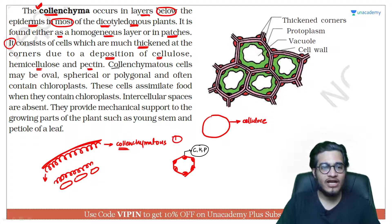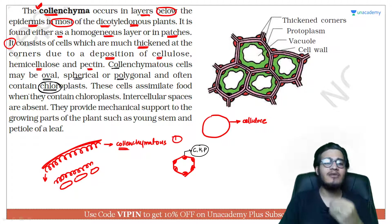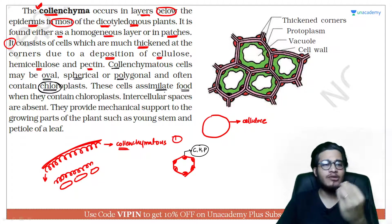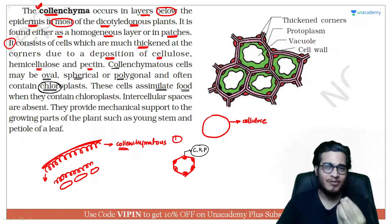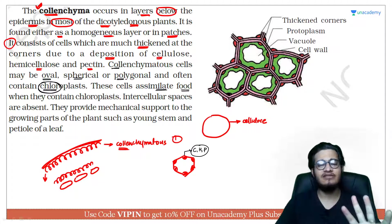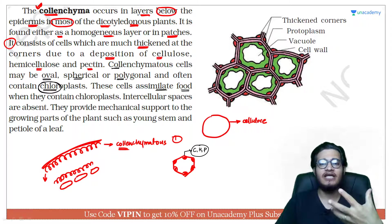Collenchyma cells can be oval, spherical, or polygonal in shape. Chloroplasts can also be present in them. Whenever chloroplasts are present, they will also work in food assimilation. If chloroplasts are absent in colenchyma, then they will not work in food assimilation — as simple as that. The presence of chloroplasts determines whether food assimilation occurs.